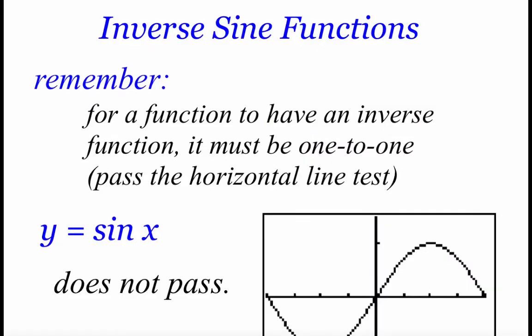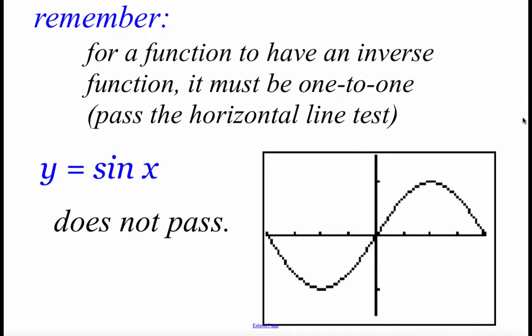So we're going to start off looking at an inverse sine function. Remember back in chapter 1, we said in order for a function to have an inverse, it has to be 1-to-1, meaning that it would pass the horizontal line test. Well, if we look at the graph for y equals the sine of x, we can draw in a horizontal line and we can see that it's not going to pass the horizontal line test. So the way this is written right now, we don't have an inverse function.